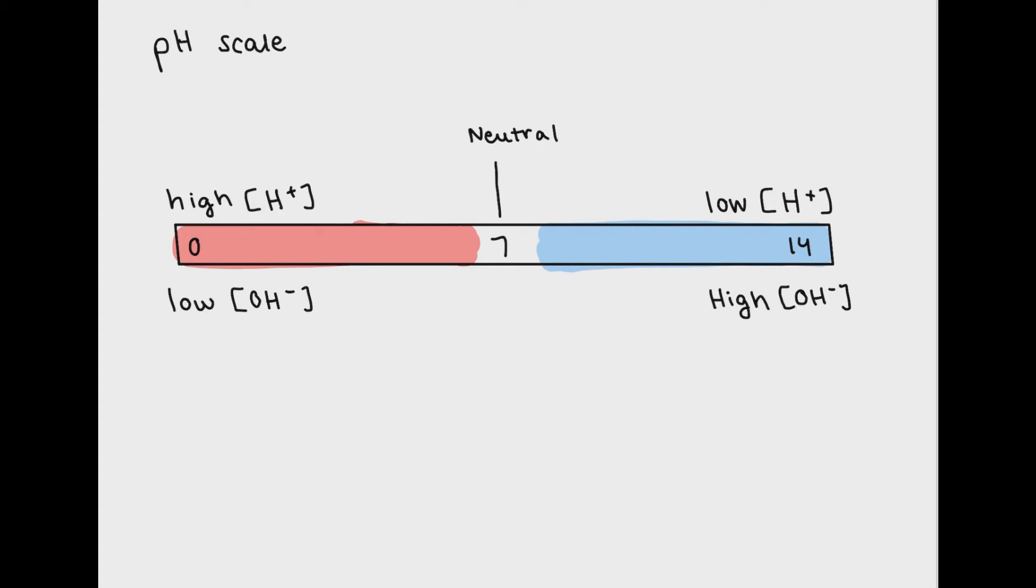A substance that has a pH closer to 14 is considered basic. The terms low pH and acidic are synonymous with each other, and likewise, high pH and basic also mean the same thing.